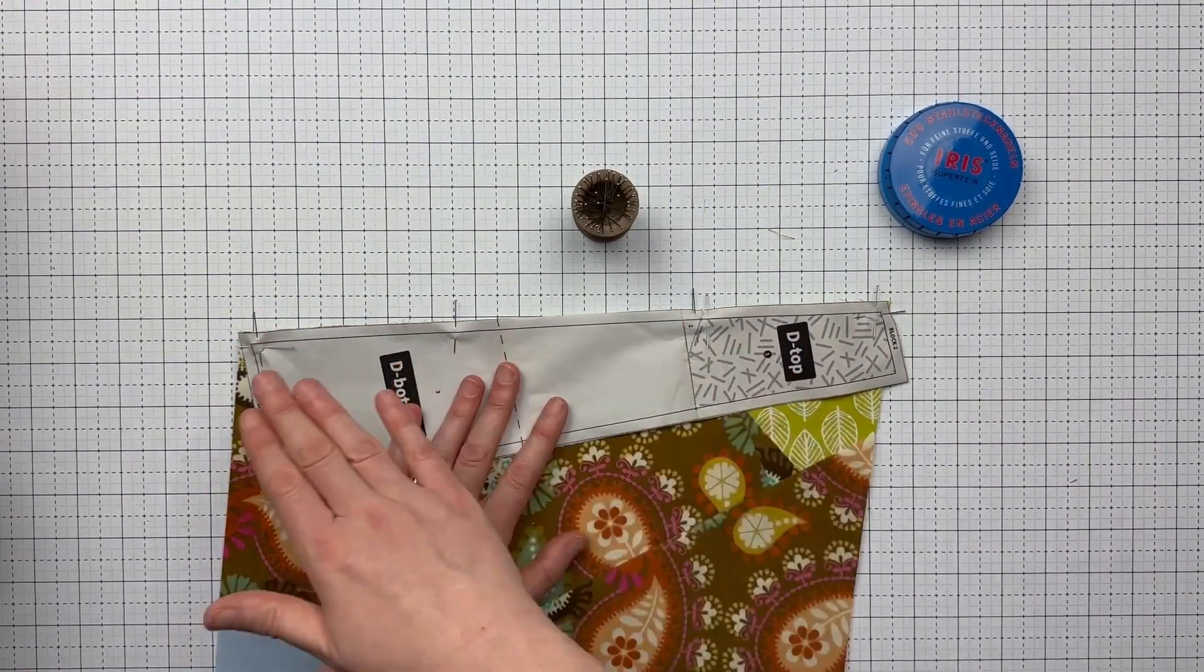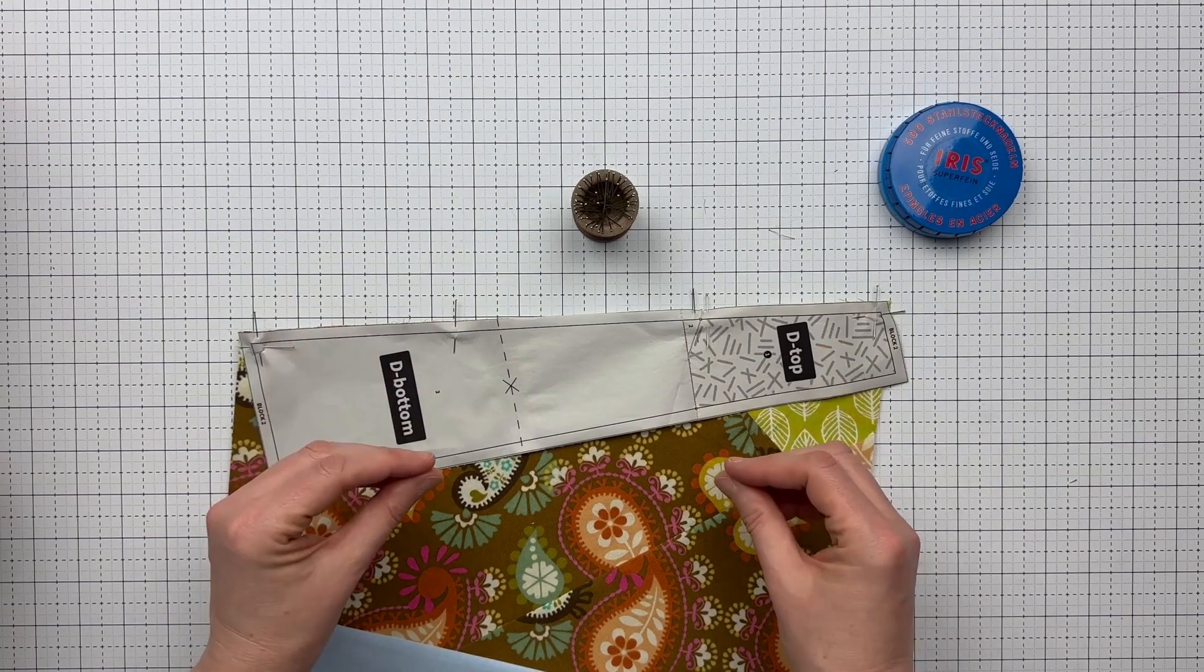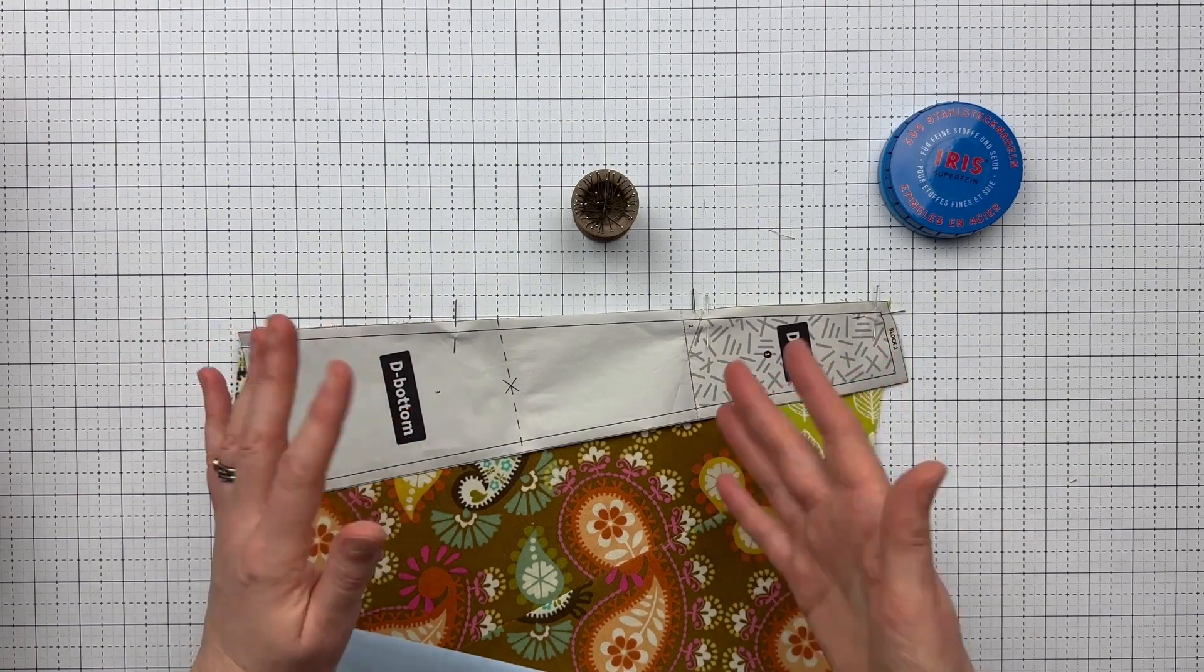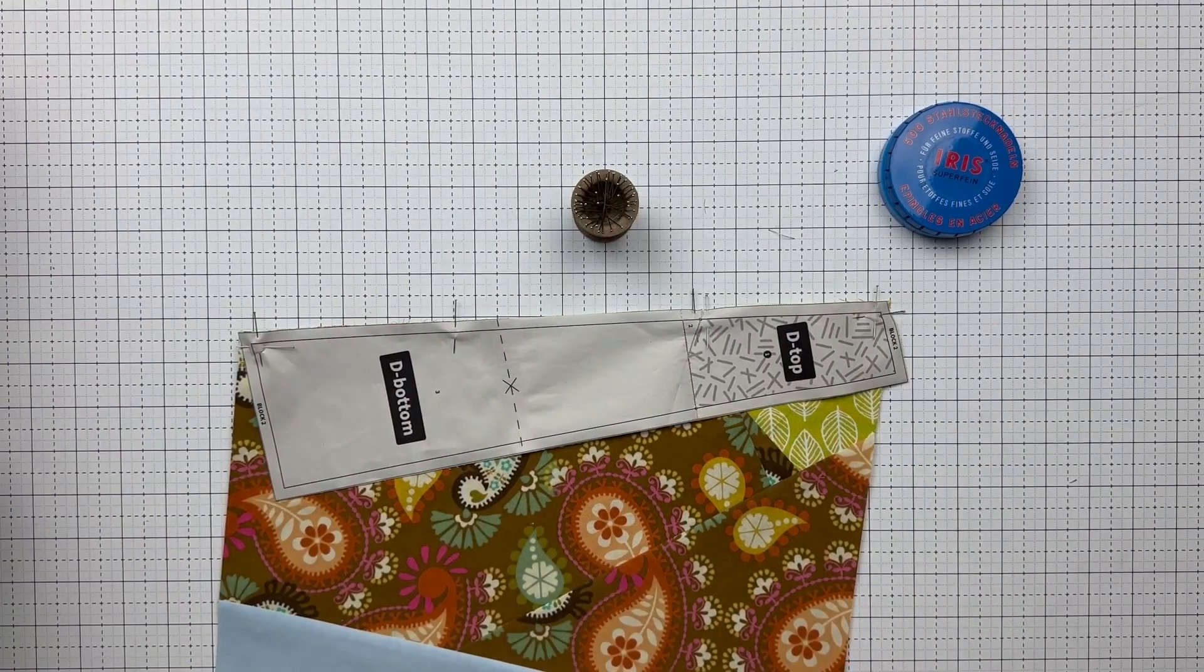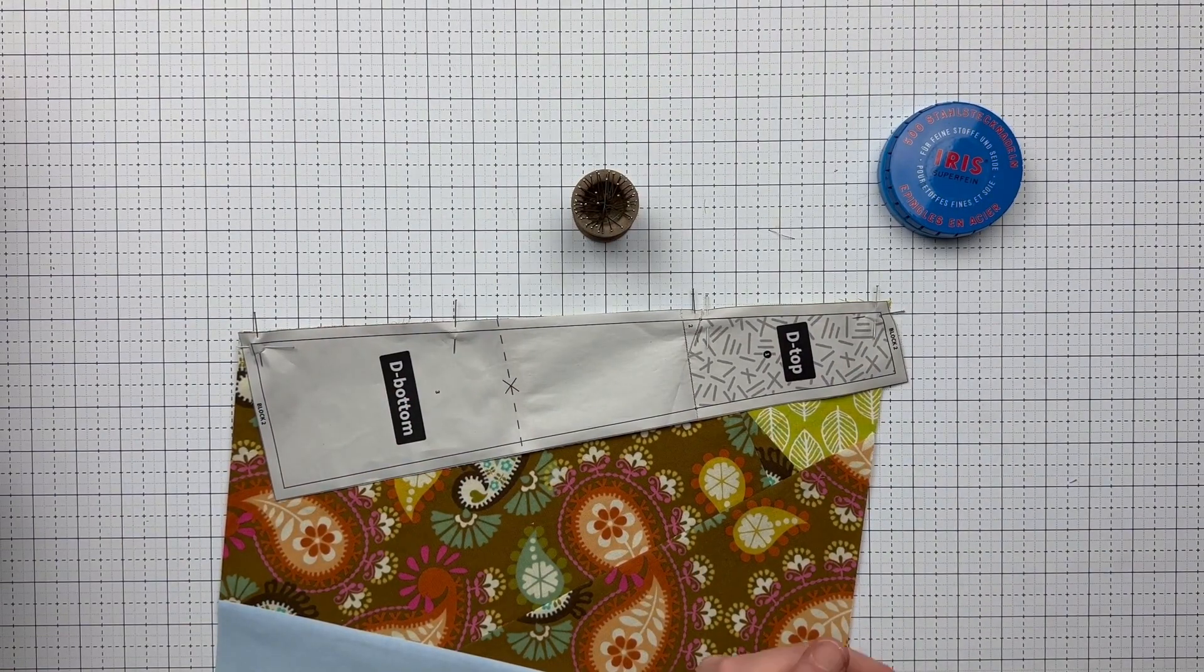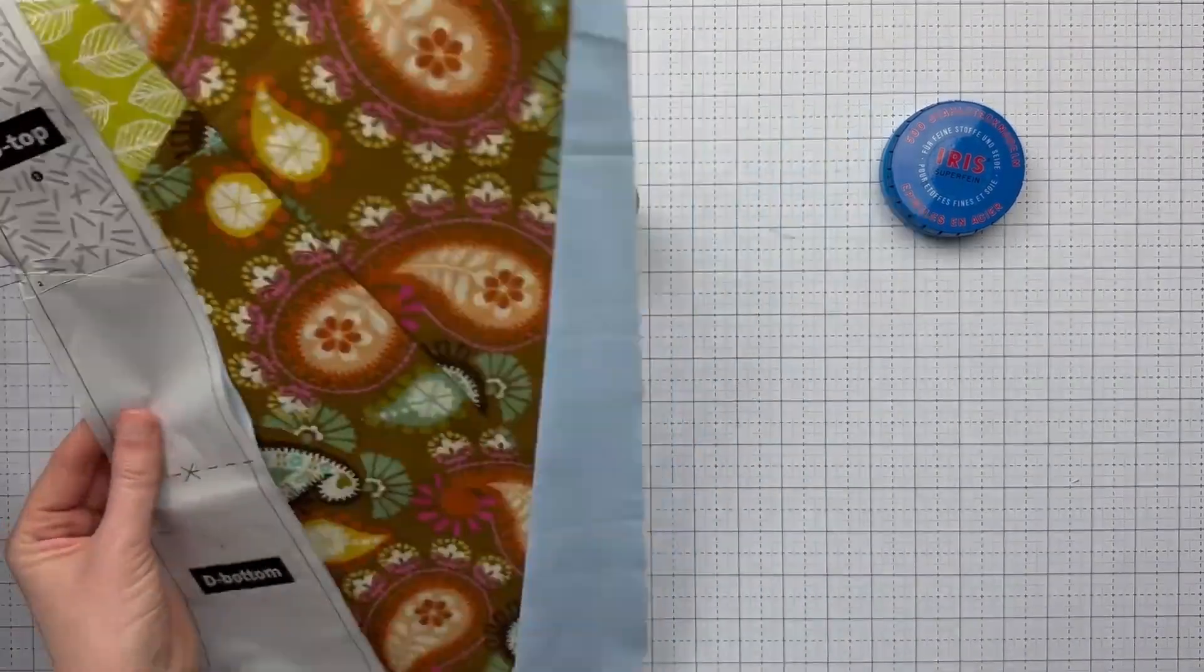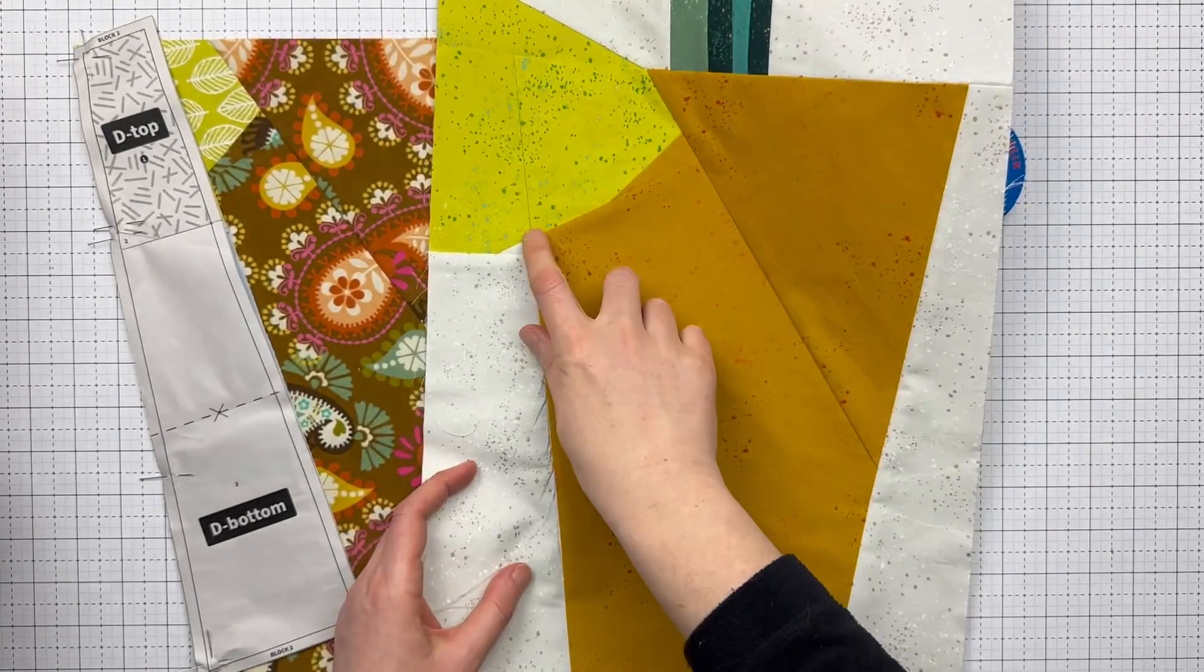If in the end, after you sew this, if your alignments aren't quite perfect, and you don't want to use a seam ripper, remember your quilt is a handmade object. Nothing handmade is perfect. And it's okay to be perfectly imperfect. So let me show you what that alignment looks like in my final block.